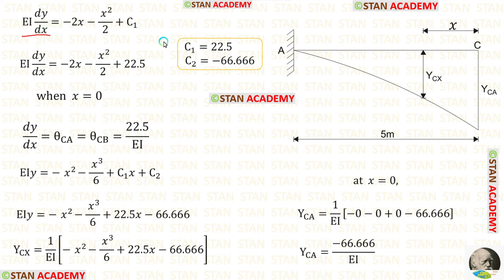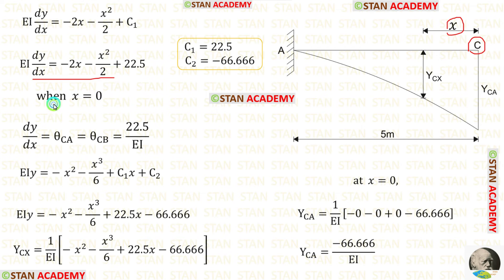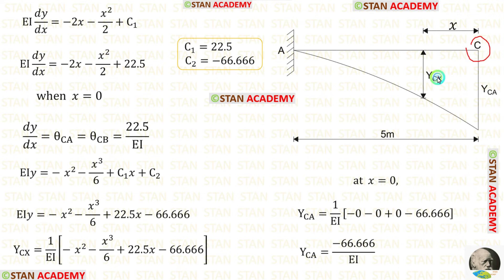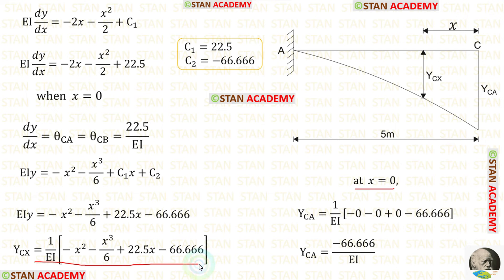In the EI dY/dX equation, let us apply the value of C1. At point C we have to find the slope. Point C is located when X is 0, so in this equation let us apply X = 0. When we do that, we are getting theta CA. We know that theta CA and theta CB will have the same value. In the EIY equation, let us apply the values of C1 and C2. Finally, we have formed an equation for YCX. At point C we have to find the deflection YCA. We know that at point C, X will be 0, so applying X = 0 gives us YCA.